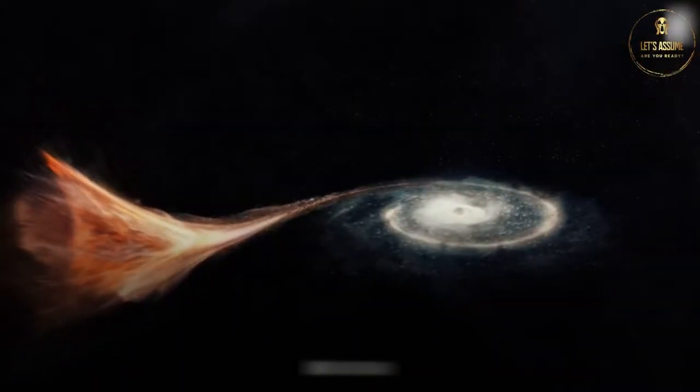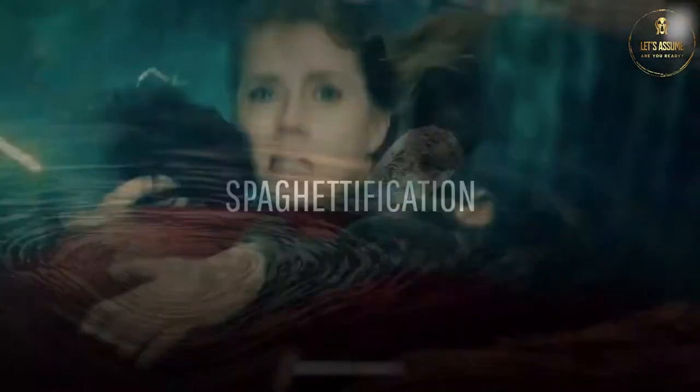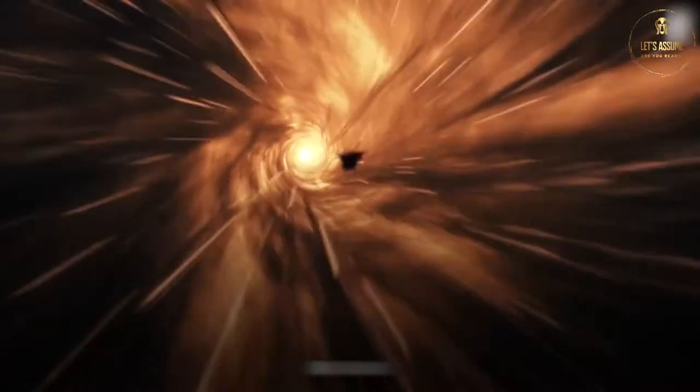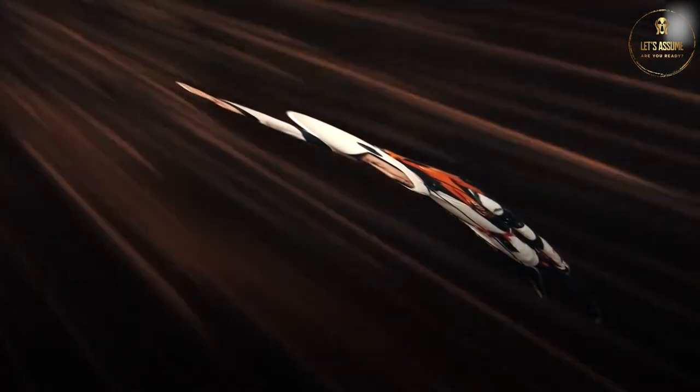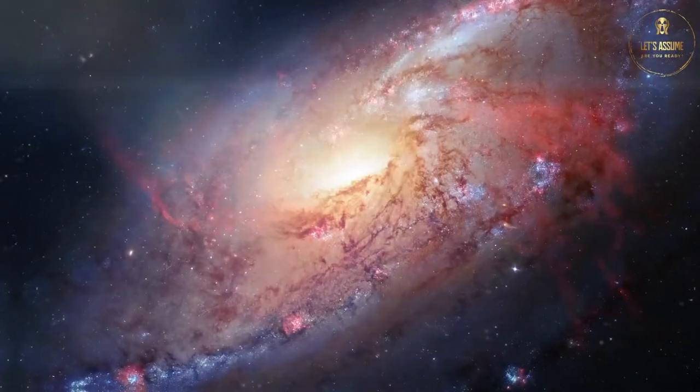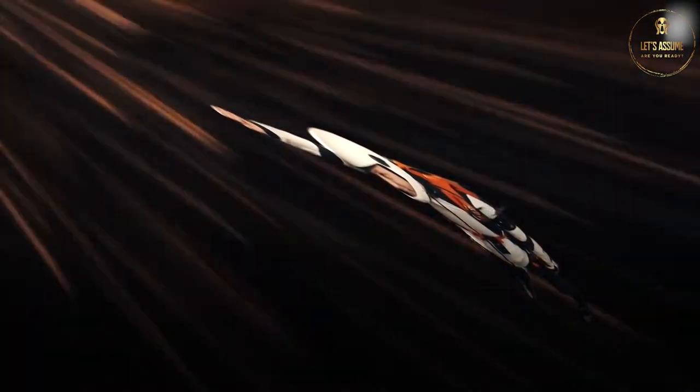From a scientific standpoint, the scientific term is spaghettification. What happens when something enters a black hole is exactly that. Things get compressed horizontally, while simultaneously being stretched vertically, making the object appear to look like spaghetti. So it seems as if the Earth entered a black hole, things would slowly start to get stretched and compressed at the same time.